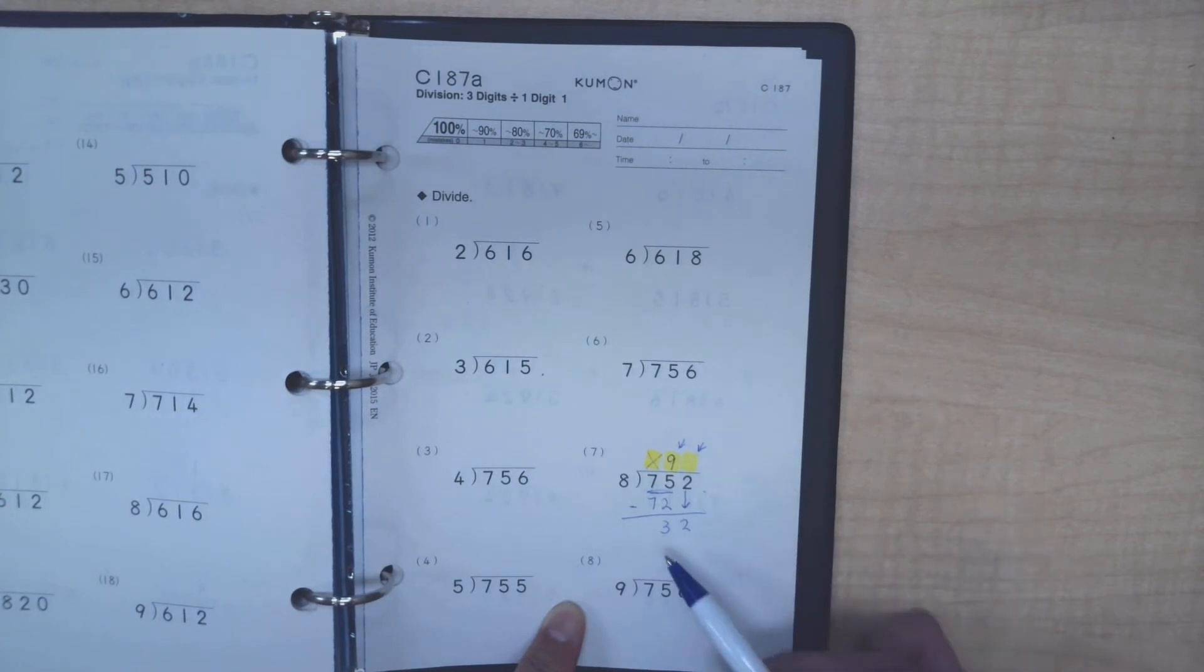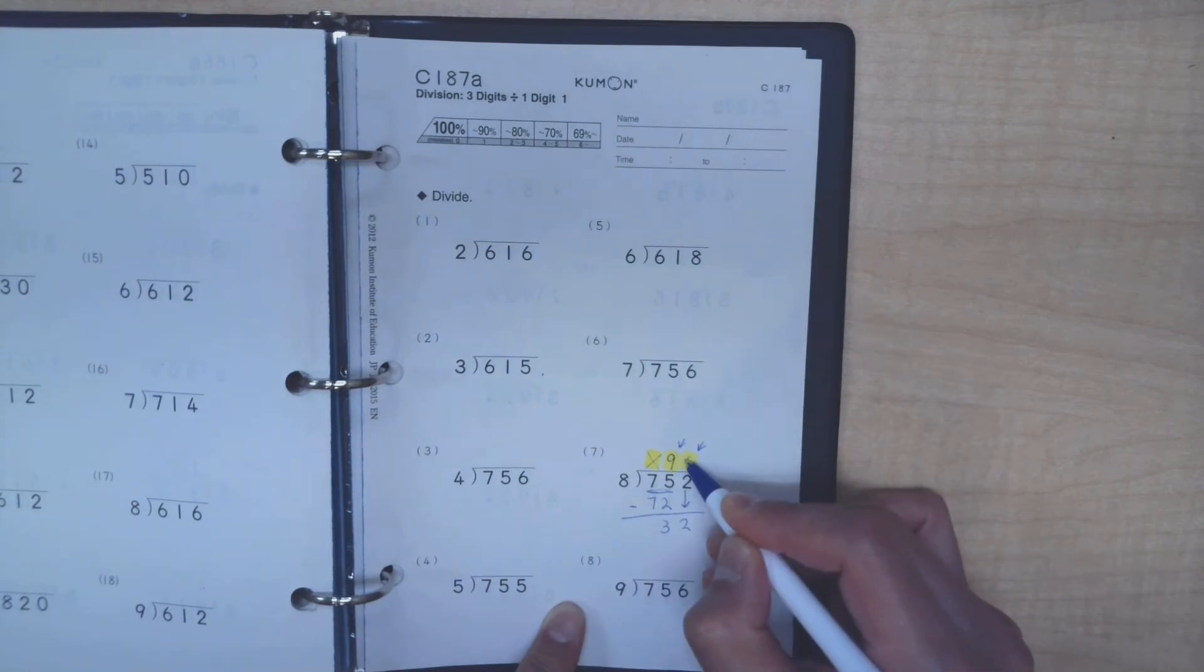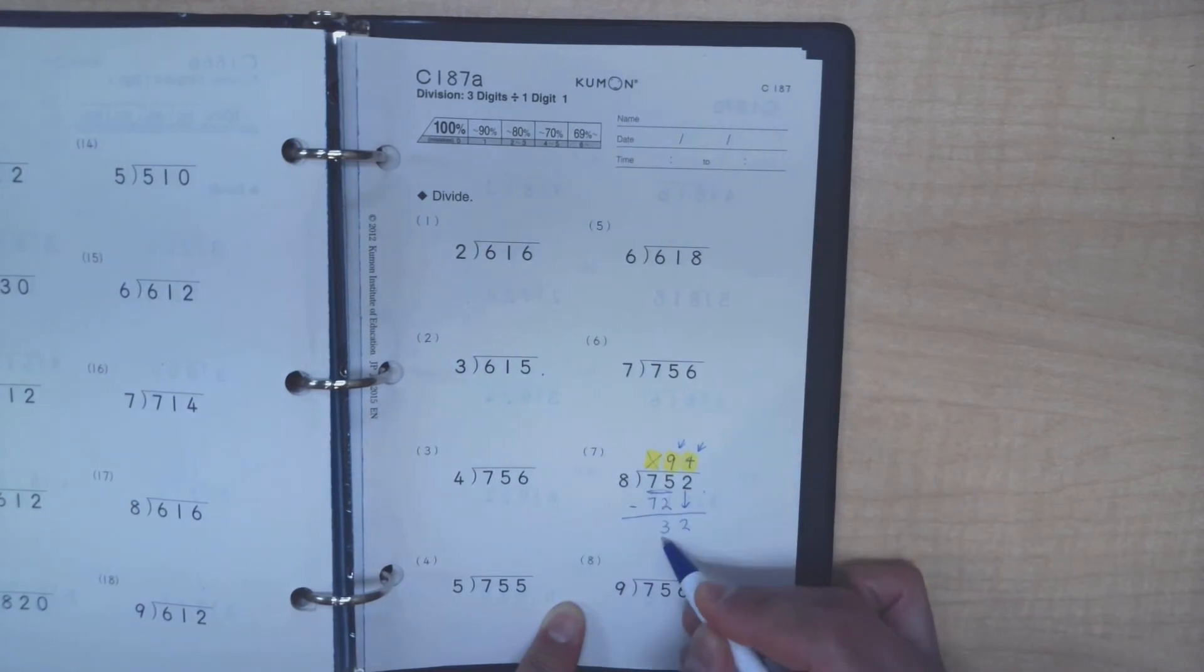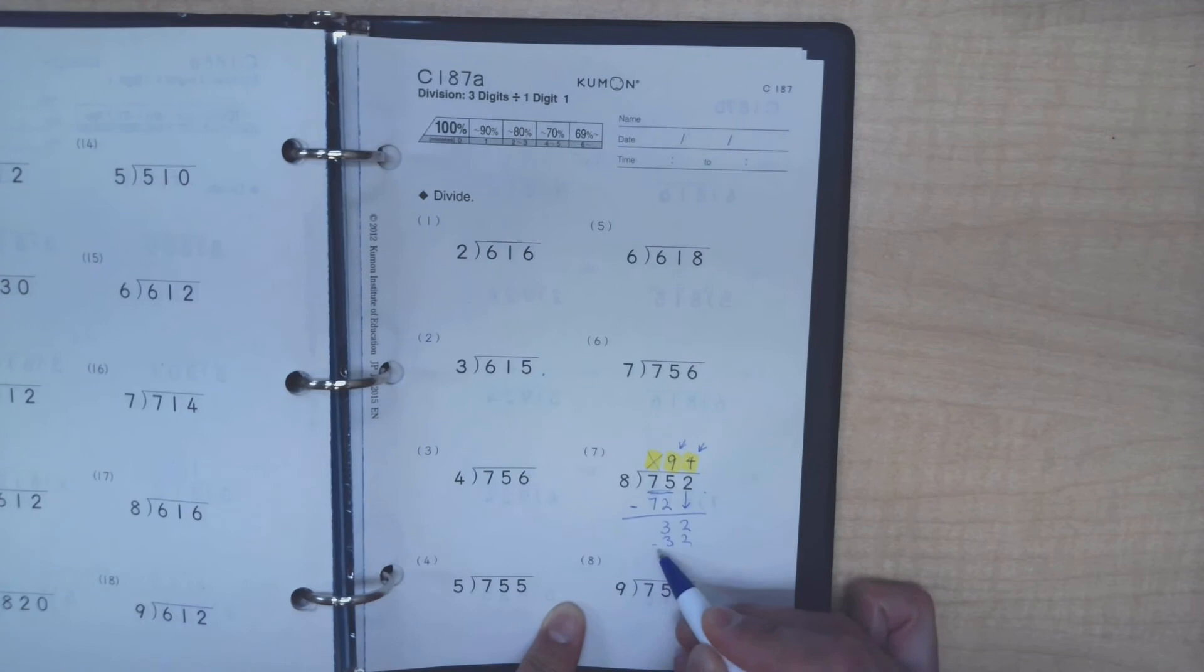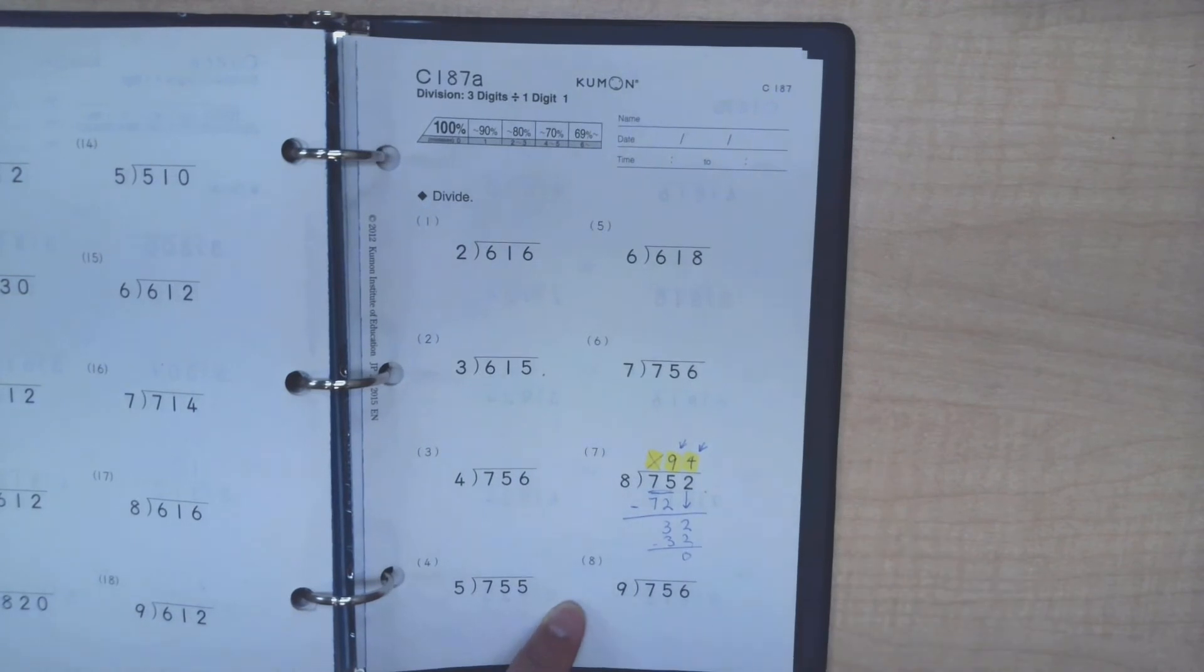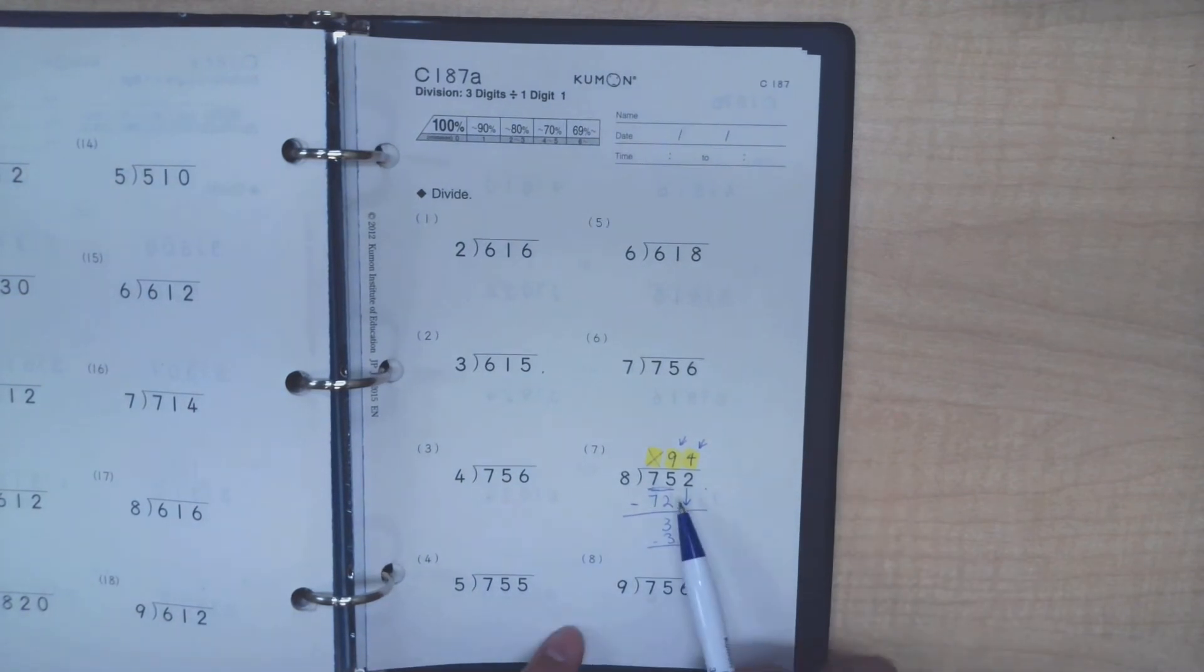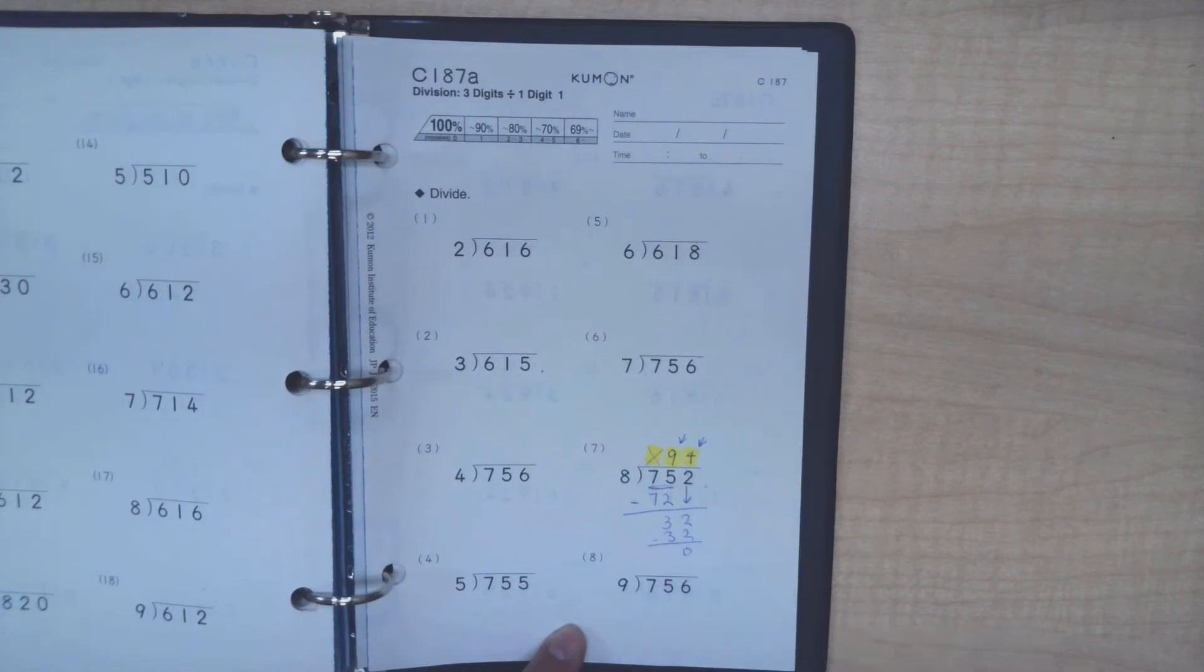The question is, what's 32 divided by 8? In other words, how many times can 8 go into 32? It's 4. 8 times 4 is 32, and when the subtraction occurs it's 0. There's 0 in the remainder, so the answer to 752 divided by 8 is 94 with no remainder.